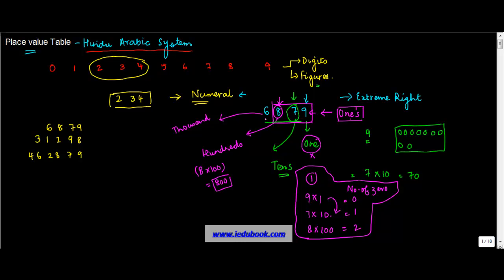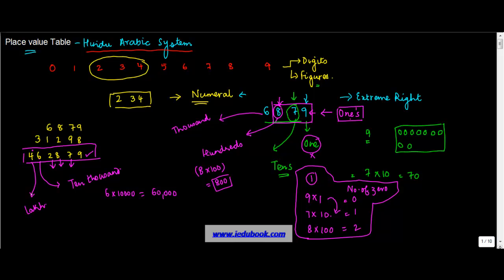This number incidentally only had 4 digits. Let's take another number. Here also: the first position is 1, the second is 10, the third is 100, the fourth is 1,000, and the fifth position is represented by 10,000. So when you talk of the digit 6 in this position, you multiply it by 10,000. Reading this number gives you 4 lakh 62,000.